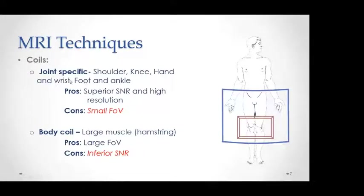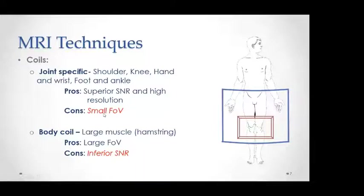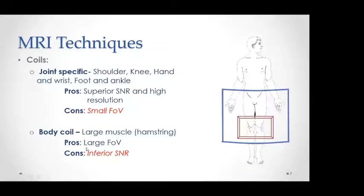Regarding coils, we have joint-specific coils and body coils. Joint-specific coils are specific for each joint — shoulder, knee, hand, foot and ankle — and provide higher signal-to-noise ratio and higher resolution. Their disadvantage is the small field of view. For pathologies involving a larger field of view, such as a hamstring muscle injury, it is better to use a body coil, though body coils have inferior signal-to-noise ratio.